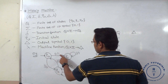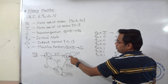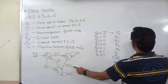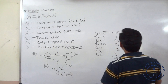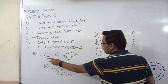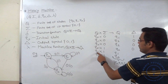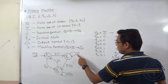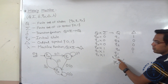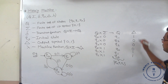Output symbol: Q0 input 0 occurs, output is 1. Q0 input 0 occurs, it goes to Q1 and output is 1. Q1 input 0 occurs, it goes to Q2, output is 0. Q0 input 1 occurs, it goes to Q2, output is 0. Q1 input 1 occurs, output is 1. Q2 input 1 occurs, it goes to Q0, output is 1. So this is the output function.